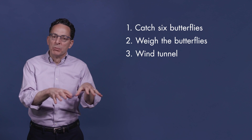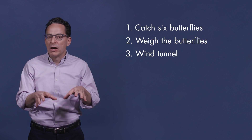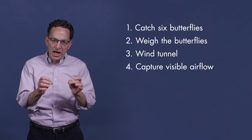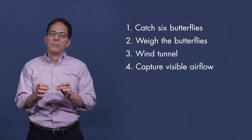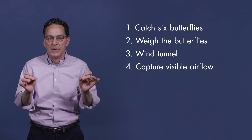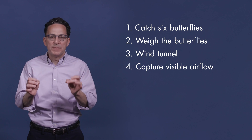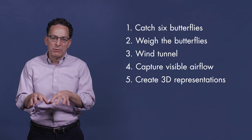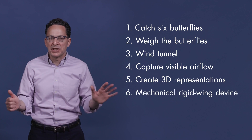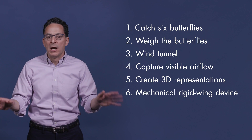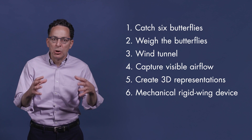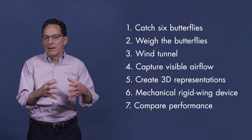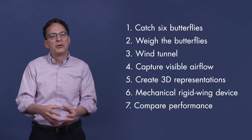Place them on a small feeder in the wind tunnel and wait for them to take off on their own. Step four: introduce tiny particles into the wind tunnel to make the airflow visible and take pictures with four high-speed cameras. Step five: convert those pictures to 3D representations. Step six: repeat the whole process with a mechanical rigid wing device, and finally compare the aerodynamic performance of the butterflies to the mechanical wing.